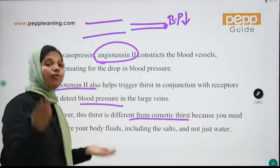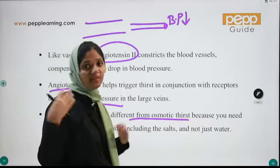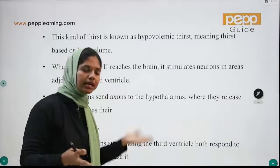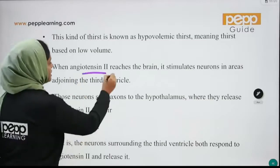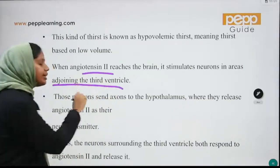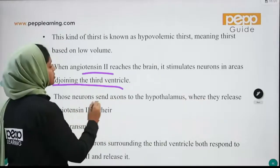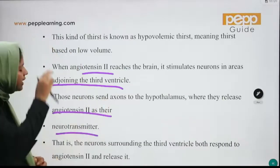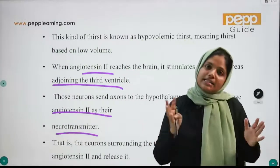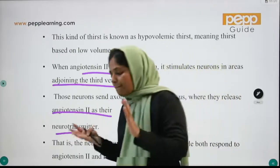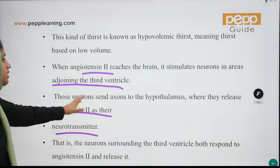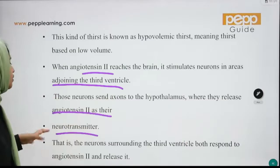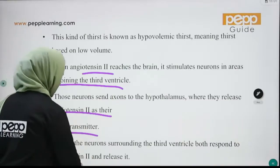Angiotensin 2 acts to restore body fluids. When angiotensin 2 reaches the brain, it stimulates neurons in areas adjoining the third ventricle. Those neurons send axons to the hypothalamus where they release angiotensin 2 as their neurotransmitter. The neurons surrounding the third ventricle both respond to angiotensin 2 and release it.